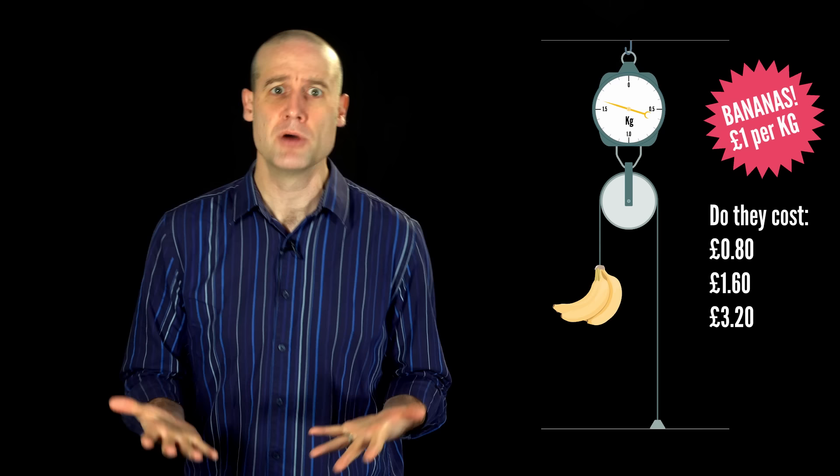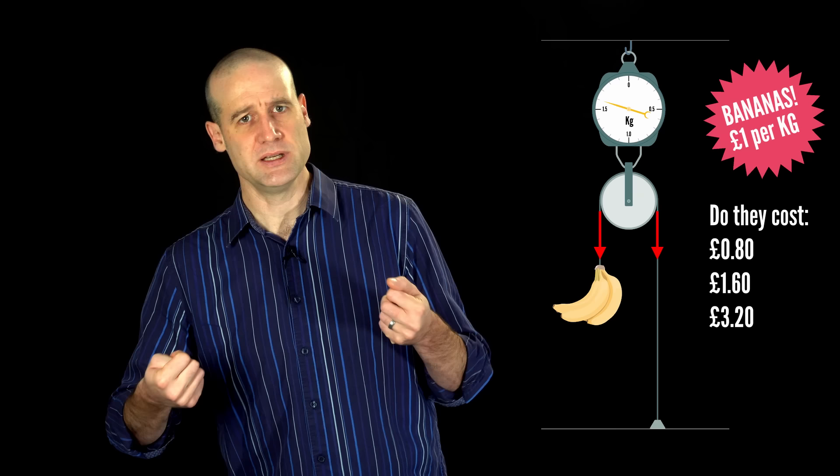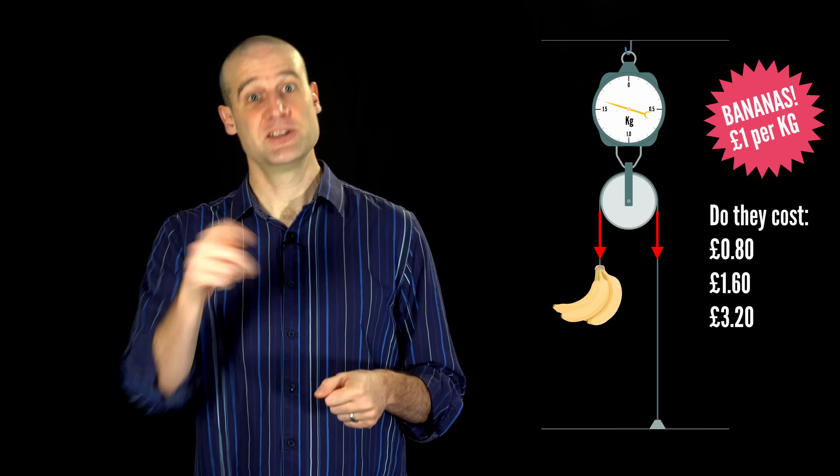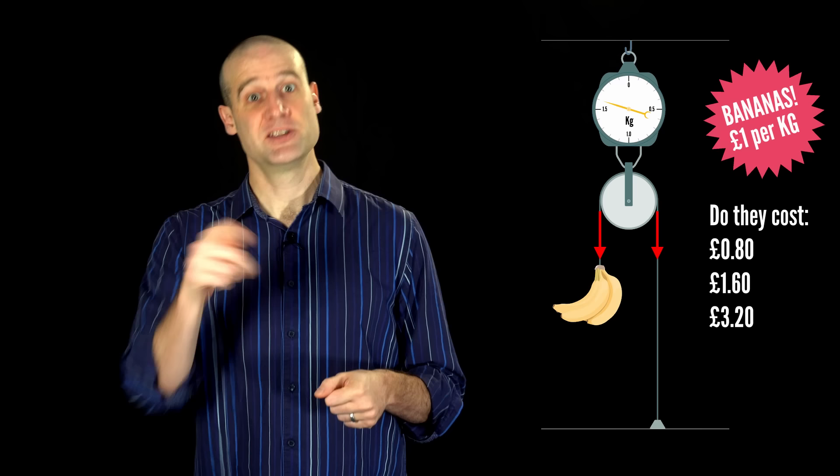So the bananas are kind of double pulling the pulley because there's tension in the string where the bananas are and over on the other side where it's attached to the ground. And so you're actually getting twice the mass of the bananas showing up on the scales because of the double pulling. So you need to half it.